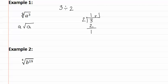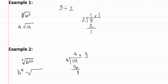Now let's look at example two. We have the fourth root of b to the nineteenth. We need to determine how many b's will come out and how many b's will stay in. We do nineteen divided by four — the exponent divided by the index. Four goes into nineteen four times with a remainder of three. This means we have four b's on the outside, or b to the fourth, and three b's on the inside.